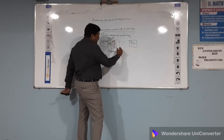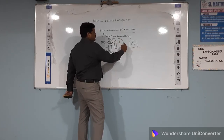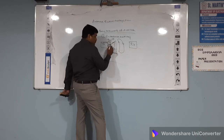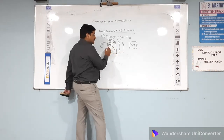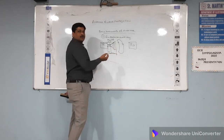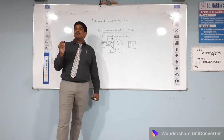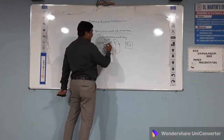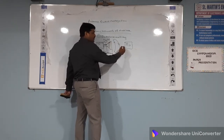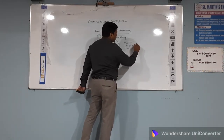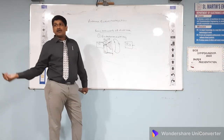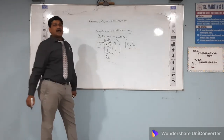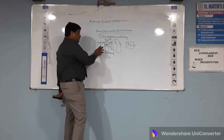These waves will be transmitted through the antenna and propagated through free space. There should be an impedance matching between the source to the transmission line, and from the transmission line to the antenna. When there is no impedance matching and impedance is not properly matched, there will be a standing wave ratio developed — that means reflections will be generated. Whatever signal is given should be transmitted to the antenna and radiated into free space, and received at the receiver. But when a mismatch occurs, standing waves will be produced.